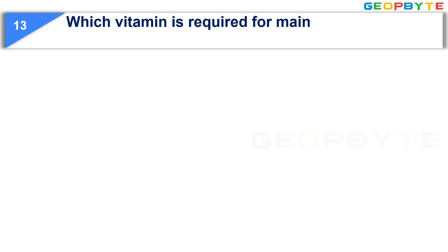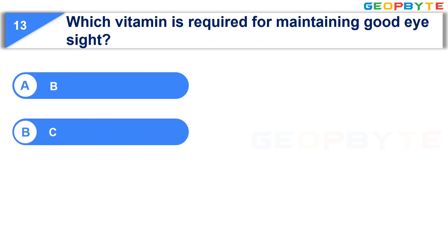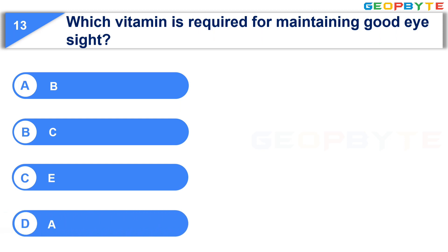Which vitamin is required for maintaining good eyesight? Option A: B. Option B: C. Option C: E. Option D: A. Your time starts now.